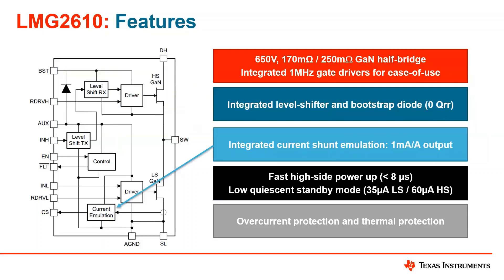One other key feature that we think is unique to this market is current sense emulation. Built into the device is a current sense emulator that is able to report back the amount of current passing through the low side GAN FET to ground. It puts out about 1 milliamp for every amp of output, and we can see this current sense emulation directly impact the amount of losses in the system.